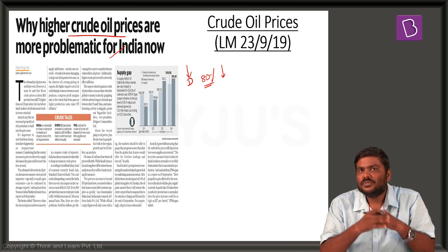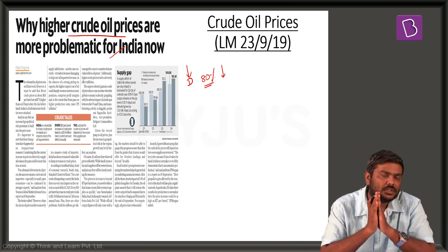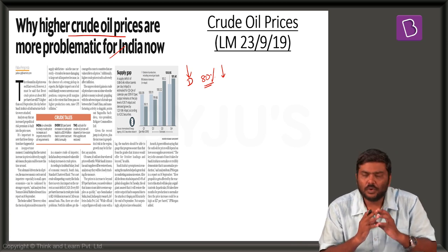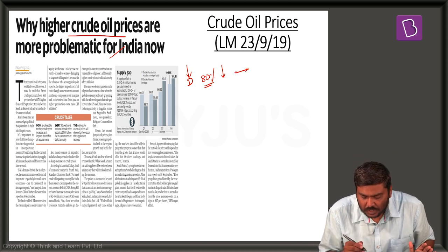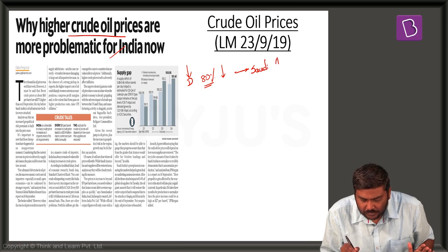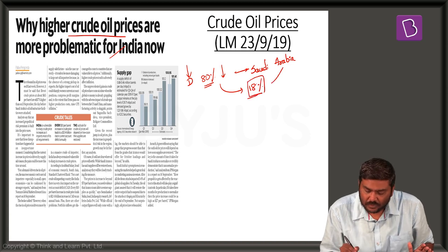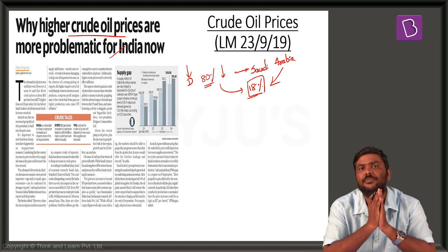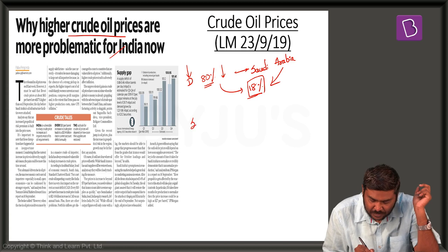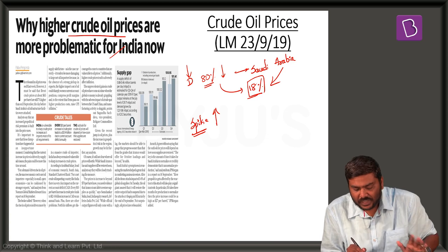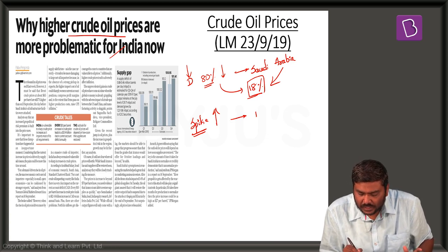These imports come from multiple markets. One of the very important sources is Saudi Arabia. As per the latest figures, 18% of the total imports coming into India are from Saudi Arabia. That is the second point. Now, the third point: whenever there is a spike in international crude oil prices, it will negatively affect crude imports into India.